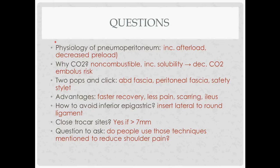For quiz-style review: the physiology of pneumoperitoneum — it's stressful, so MAP goes up and systemic and pulmonary vascular resistance go up; it's like a big mass, so venous return goes down, vital capacity goes down, heart rate tries to compensate but cardiac output net goes down. Why use CO2? It's non-combustible and more soluble, so there's less risk of a CO2 embolus. With the Veress needle: first pop is abdominal fascia, second pop is peritoneal fascia, click is the safety stylet coming out. General advantages of laparoscopic surgery: quick recovery, less pain, less scarring, less ileus.